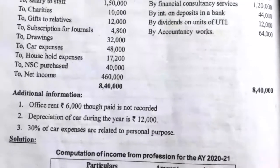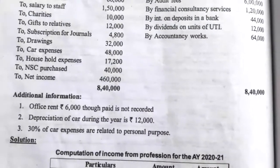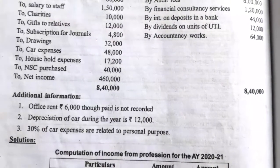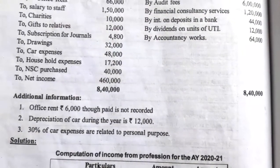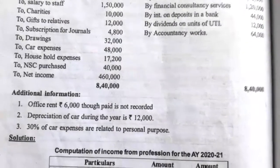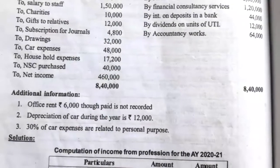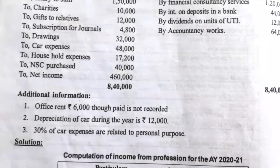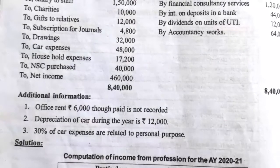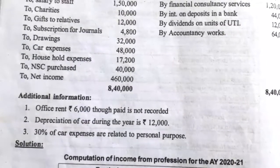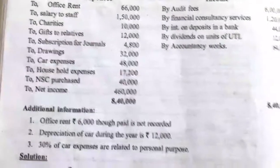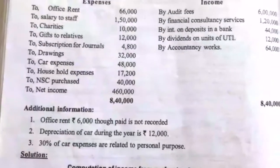Now see the additional information. Office rent of Rs. 6,000, though paid, is not recorded. Depreciation of car during the year is Rs. 12,000. 30% of car expenses are related to personal purpose.